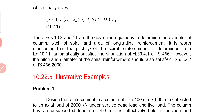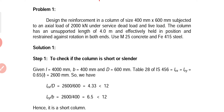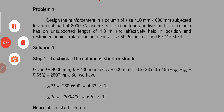It is worth mentioning that the pitch p of the spiral reinforcement, if obtained from this formula, will automatically satisfy the stipulation of IS 456. However, the pitch and diameter of the spiral reinforcement should also satisfy the additional conditions specified in IS 456.